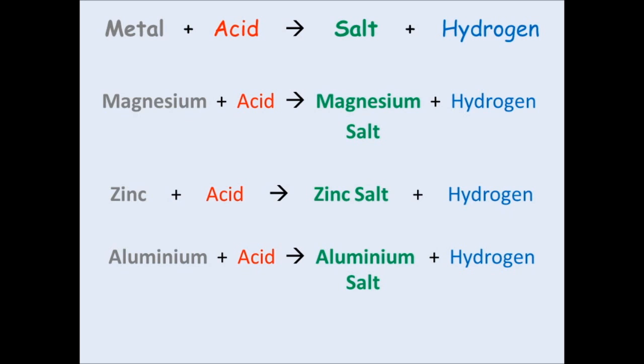You'll notice hydrogen gas is also produced. This is produced in any reaction where a metal is reacted with an acid, regardless of which metal it is or which acid it is.